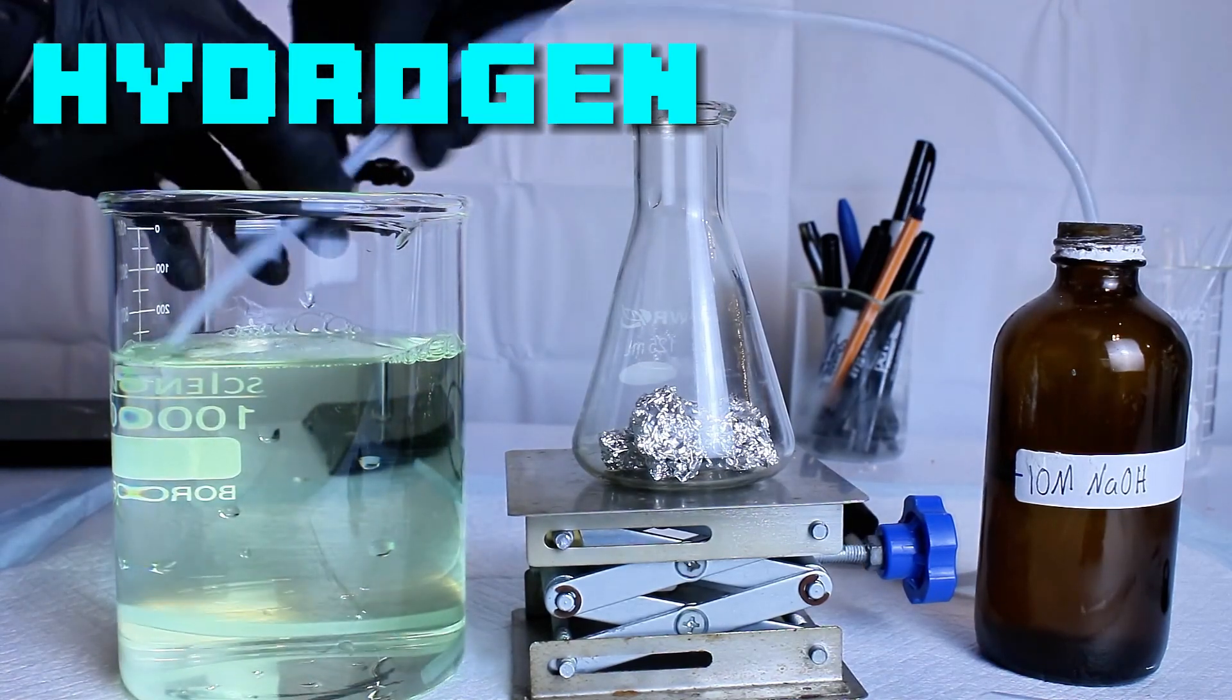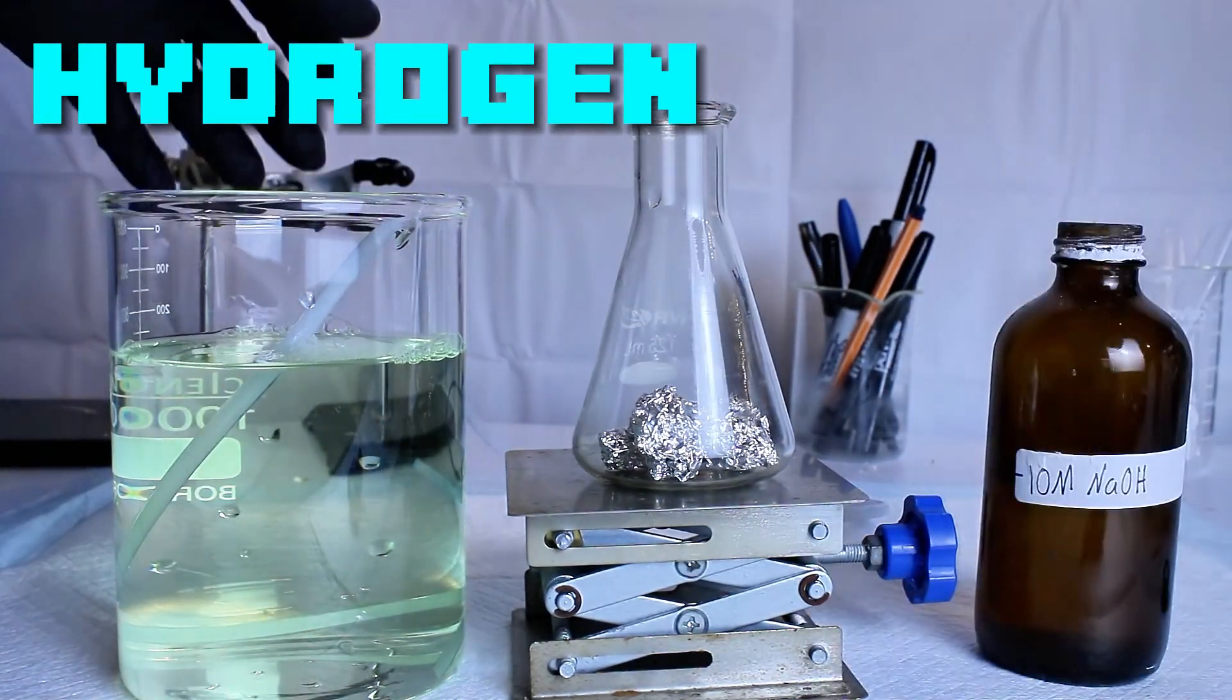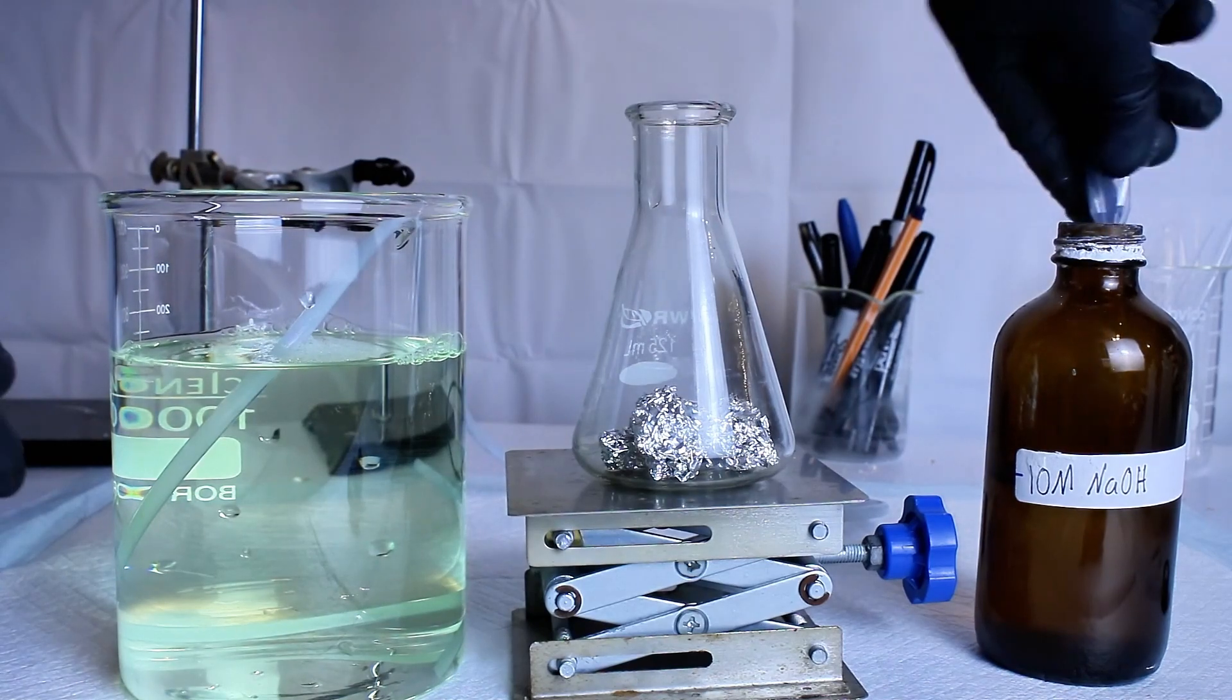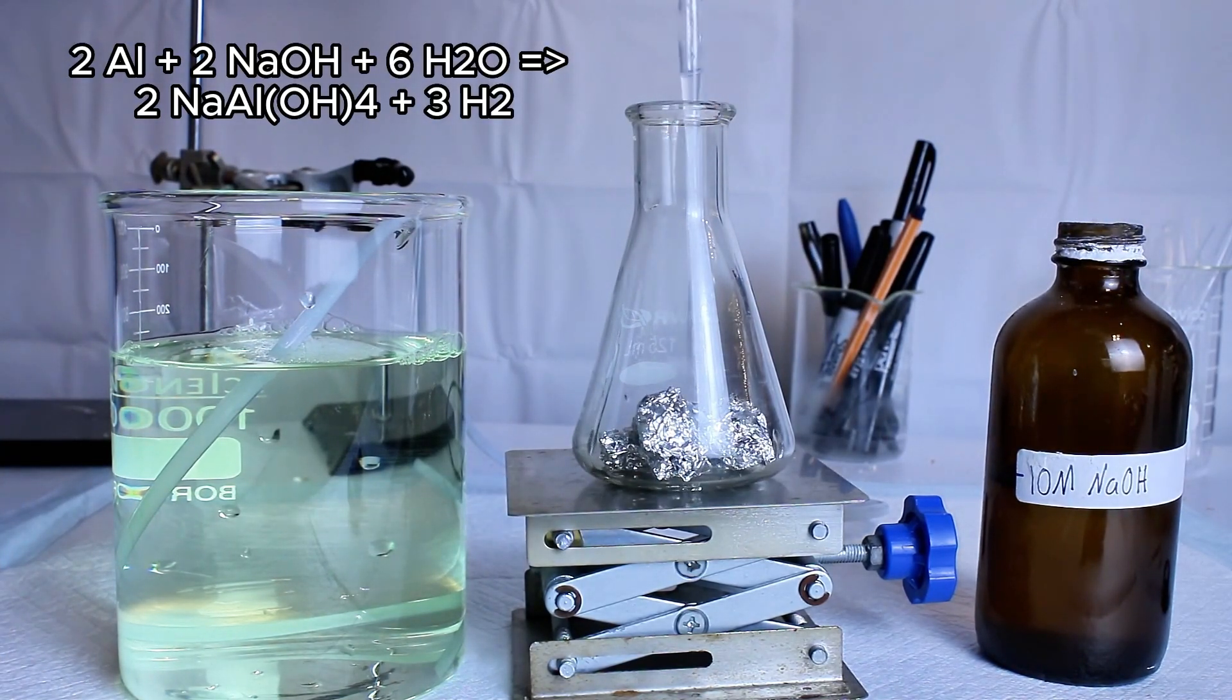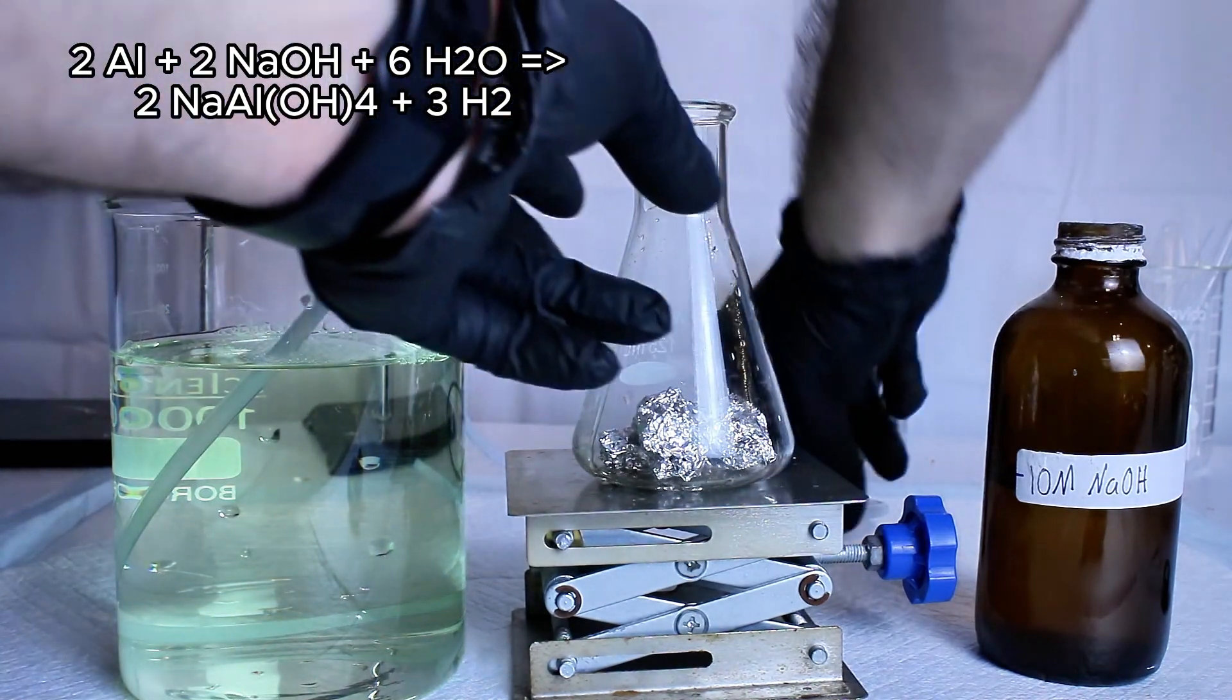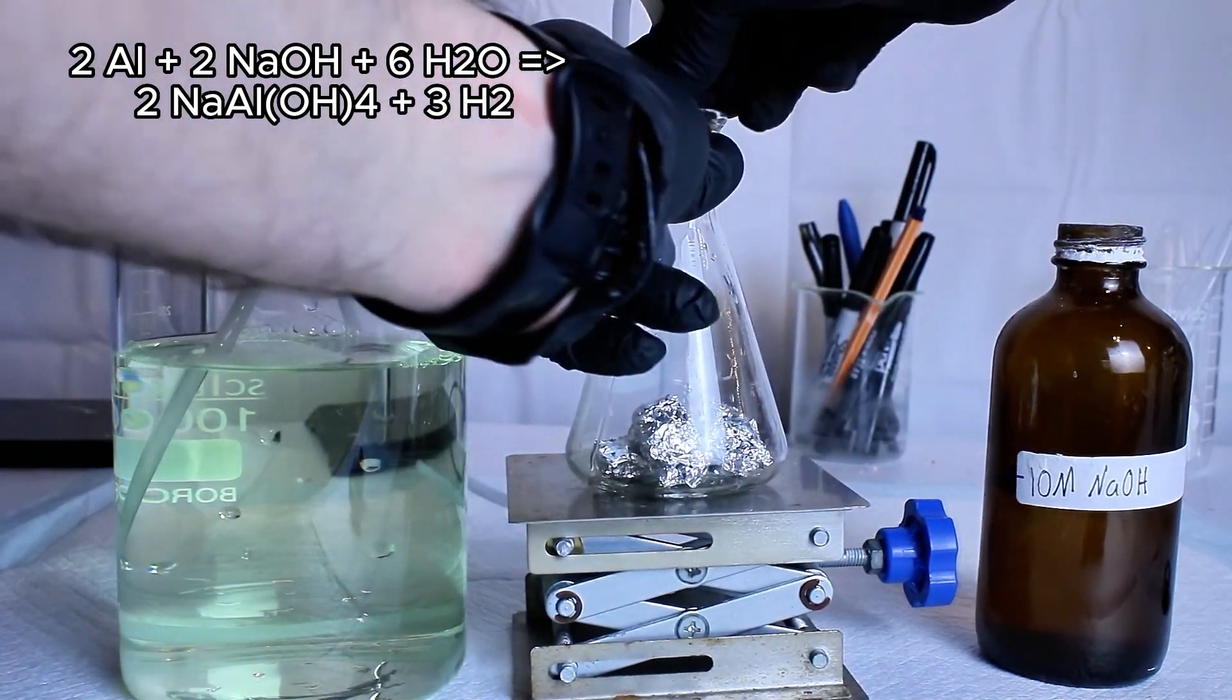Today I'm going to show you how to make and talk a bit about hydrogen gas, which is the most abundant and lightest element in the universe. To do this, I simply react sodium hydroxide with some aluminum foil, which will quickly generate hydrogen gas and aluminum hydroxide.